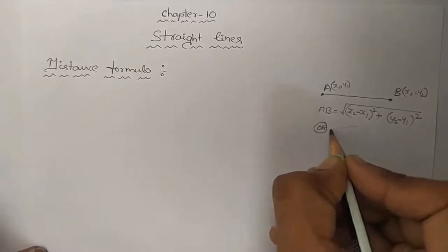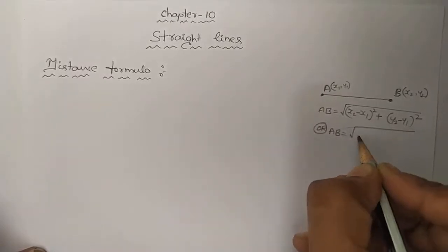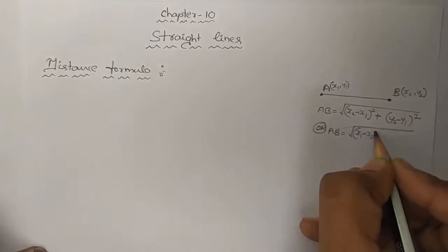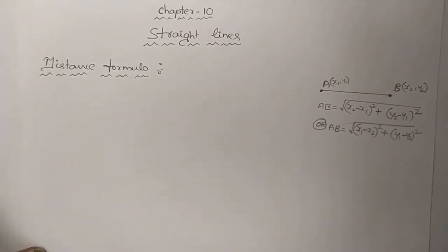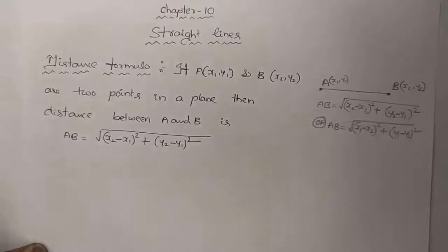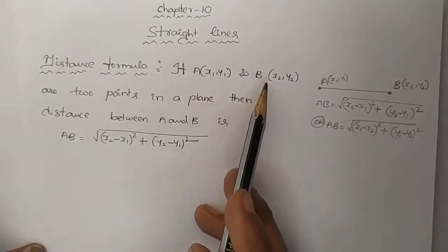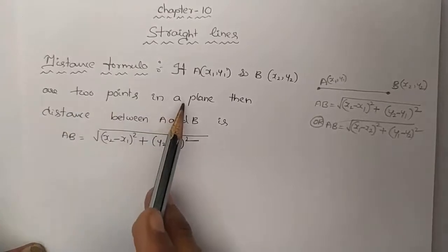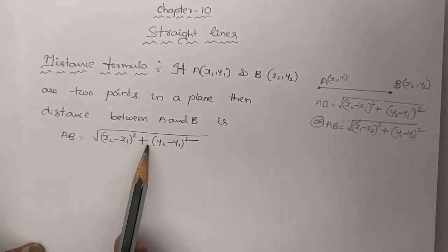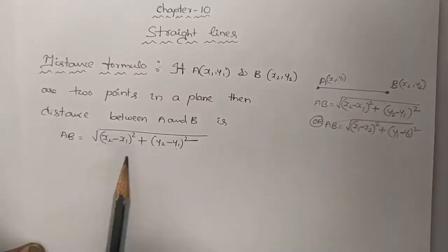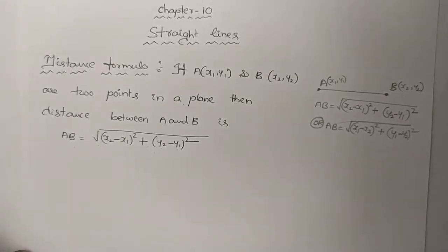This can also be written as AB equals to square root of (x1 minus x2) whole square plus (y1 minus y2) whole square. So it is the distance formula.